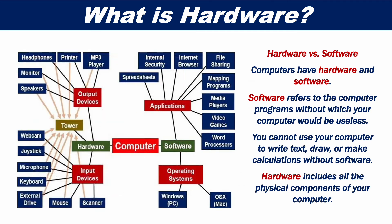So what's the difference between hardware and software? Computers have hardware and software. Software refers to the computer programs without which your computer would be useless. You cannot use your computer to write text, draw or make calculations without software. Hardware includes all the physical components of your computer.